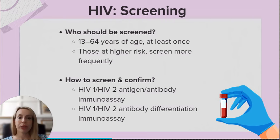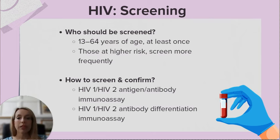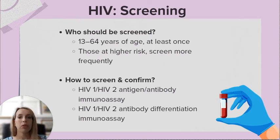So who do we screen and how do we do it? The CDC recommends that all patients between the ages of 13 and 64 be tested for HIV at least once as part of routine health care. Those at higher risk, such as men who have sex with men or those who use intravenous drugs, need to be screened at more frequent intervals. The current preferred method for screening is the HIV-1/HIV-2 antigen-antibody immunoassay. Those results would be considered preliminary and need to be confirmed using the HIV-1/HIV-2 antigen-antibody differentiation immunoassay.